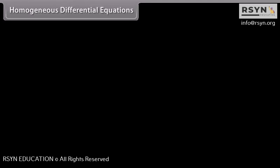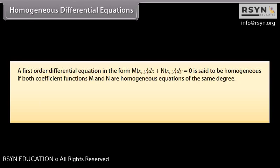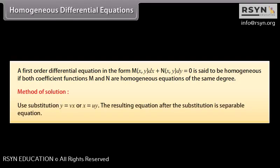Homogeneous differential equations: an equation in the form M(x,y)dx + N(x,y)dy = 0 is homogeneous if both coefficient functions M and N are homogeneous equations of the same degree. Method of solution: use the substitution y = vx (or x = uy); the resulting equation after substitution is a separable equation.